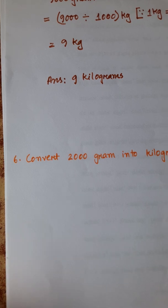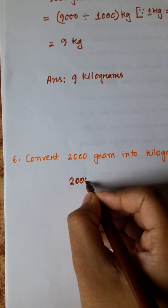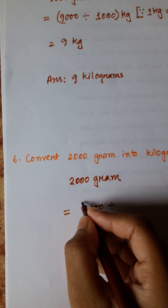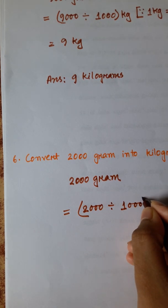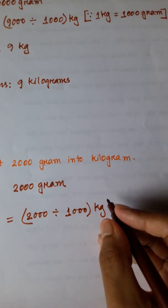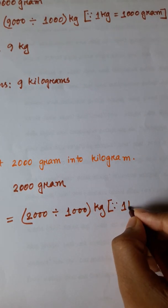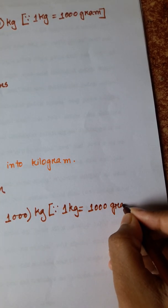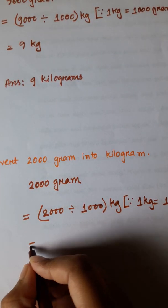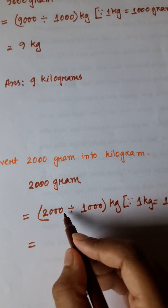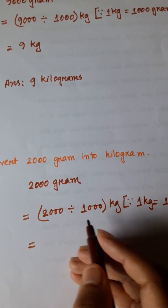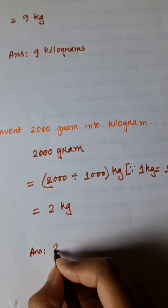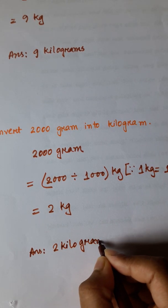Number six is the same method. Convert 2000 gram into kilogram. 2000 divided by 1000 kg, since 1 kg is equal to 1000 gram. Similar way we divide, three zeros here, three zeros here, cancel them. 2 divided by 1 is 2 kg. So answer is 2 kg.